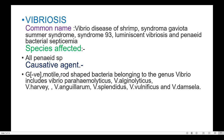Vibriosis — Common names: Vibrio Disease of Shrimp, Syndrome of Gaviota, Summer Syndrome, Syndrome 93, Luminescent Vibriosis, and Penaeid Bacterial Septicemia.